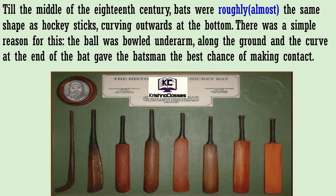Till the middle of the 18th century, bats were roughly the same shape as hockey sticks, curving outwards at the bottom. 18th century ke middle tak bats lagbhag usi shape ke hote thay jaise ki aaj kal hockey sticks hoti hain — bahaar ki taraf thoda sa mure huye, bottom par, yani sabse neeche ki hisse par bahaar ki taraf thoda mure huye hoti thi.